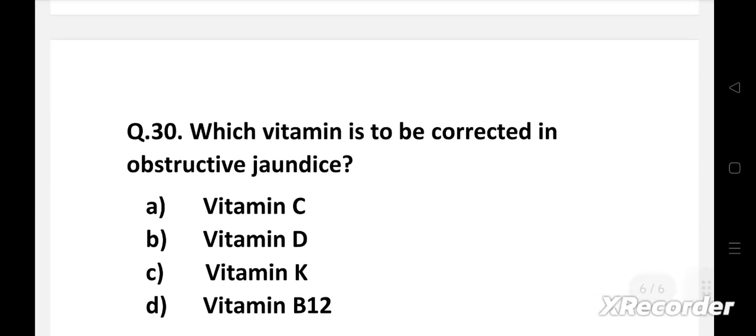Question 30: Which vitamin is to be corrected in obstructive jaundice? Option A: vitamin C, B: vitamin D, C: vitamin K, D: vitamin B12.